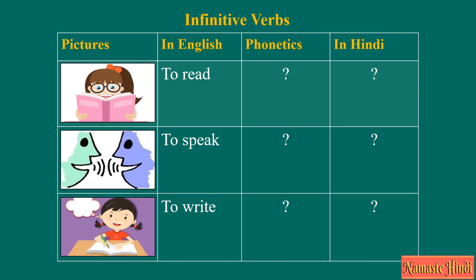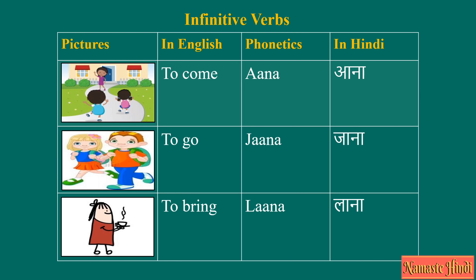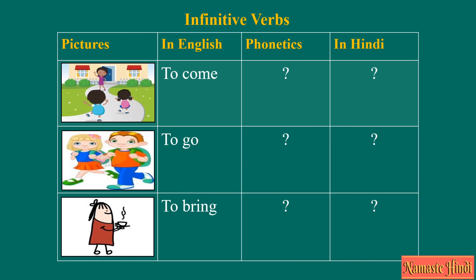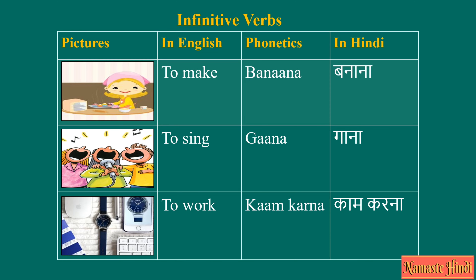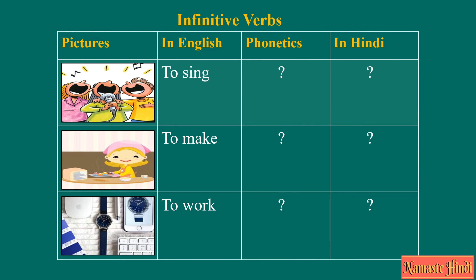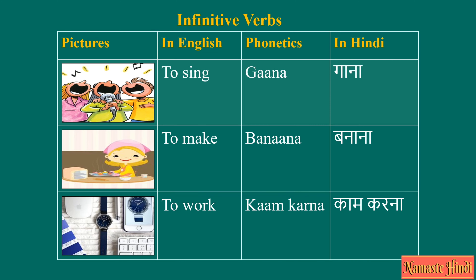Now you try. To speak — bolna. To go — jana. To bring — lana. To make — banana. To sing — gaana. To work — kaam karna. If you said 'to sing' as banana, then you have been tricked — to sing is gaana, to make is banana, to work is kaam karna.